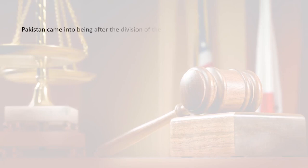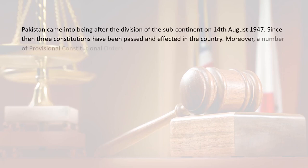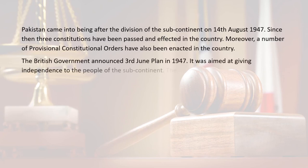Pakistan came into being after the division of the subcontinent on August 14, 1947. Since then, three constitutions have been passed and effected in the country. Moreover, a number of provisional constitutional orders have also been enacted. The British government announced the June 3rd Plan in 1947, aimed at giving independence to the people of the subcontinent. The main points of the plan were as follows.